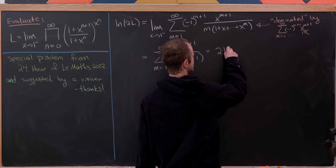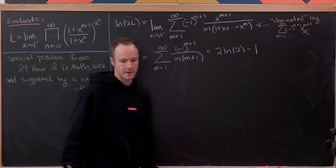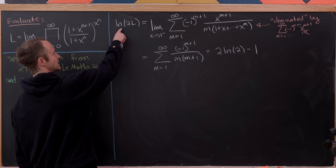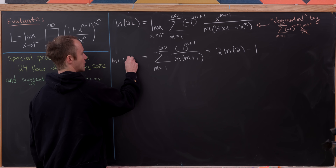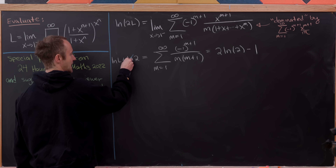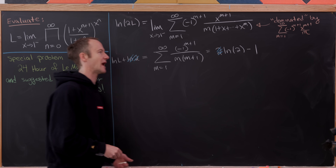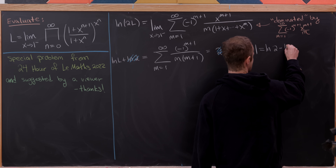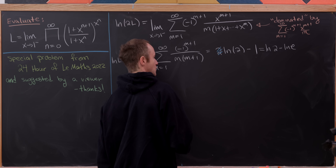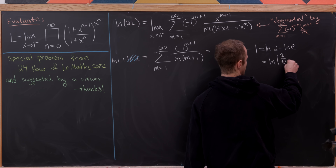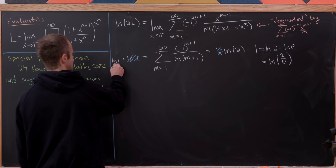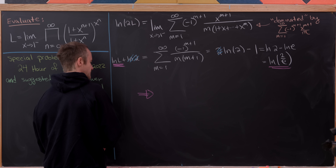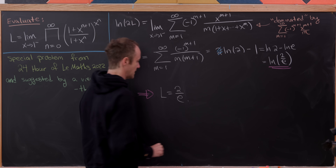Plugging in x = 1, the numerator is 1 and there are exactly m+1 ones in the denominator, giving the sum as m from one to infinity of (−1)^(m+1) / (m(m+1)). Via partial fractions and recognizing the resulting series as logarithms, this equals 2·ln(2) − 1. Moving ln(2) to the left combines as ln(l) + ln(2) = 2·ln(2) − 1, so ln(l) = ln(2) − 1 = ln(2/e). Exponentiating both sides, l = 2/e. That is the value of our limit.